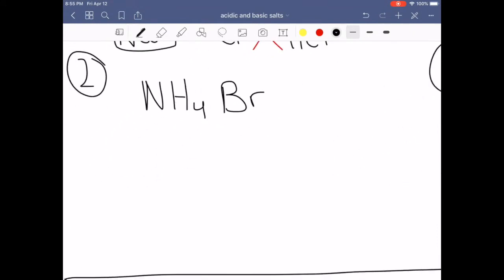All right, let's look at the next one. So the next one, we have Br, which is neutral. This has protons. It could potentially donate protons, which means it could be acidic.